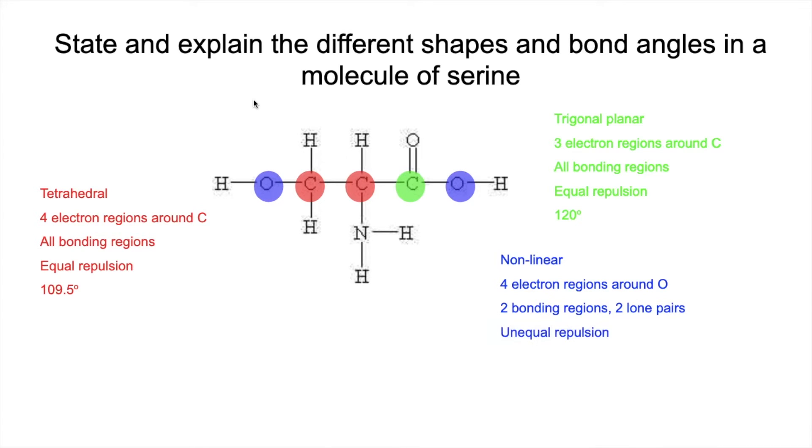We've got unequal repulsion and I'm going to give the full order of repulsion strength. Lone pair to lone pair repulsion, which you would have between the two lone pairs, is greater than lone pair to bonding pair. Obviously, you've got that here. And bonding pair to bonding pair is the weakest type of repulsion. Much better to say that than lone pairs repel more than bonding pairs.